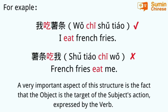A very important aspect of this structure is the fact that the object is the target of the subject's action, expressed by the verb. For example, using the verb 吃: 我吃鱼条 — subject plus verb plus object. But you cannot say 鱼条吃我.